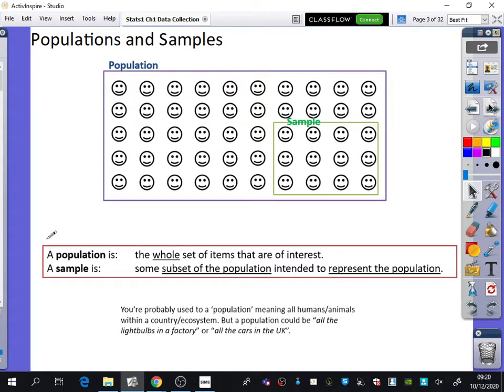Let's kick off with definitions. There are a lot of definitions in statistics, so I've printed them in your booklet for reference. This section is about populations and samples. I've got a picture representing the population, and a subgroup of this population is called the sample. The population is the whole set of items that are of interest.